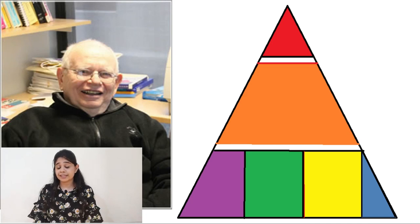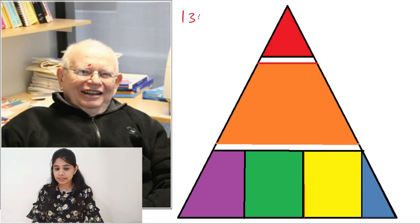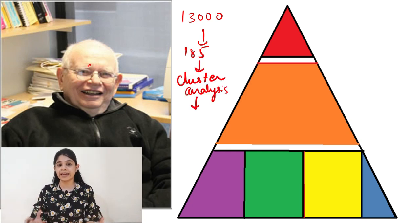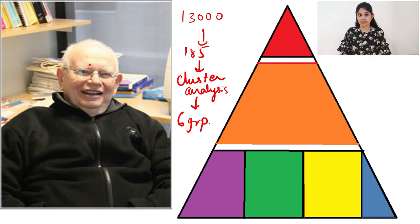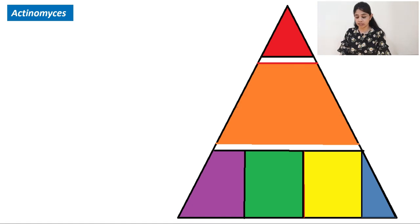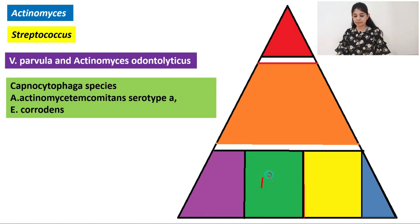One more very important contribution by Sigmund Socransky is that he gave us bacterial complexes. He examined almost 13,000 sub-gingival plaque samples from 185 subjects and performed cluster analysis, grouping them into six very closely associated groups of bacterial species. At the base of the pyramid we can see three major colors: the purple, the green, and the yellow, which basically form the primary colonizers.